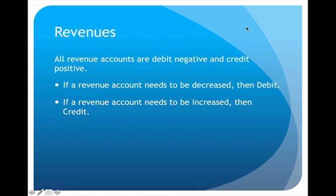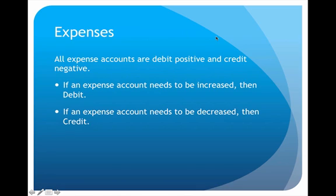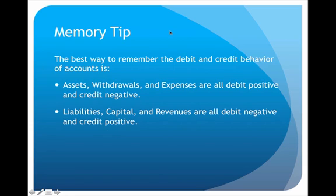Revenue accounts — whether a single account or multiple accounts — follow a debit negative, credit positive behavior pattern. If you want to decrease revenue that's a debit; if you want to increase revenue that's a credit. Expense accounts, of which there are usually many for all the various expenses a company pays, follow a debit positive, credit negative pattern. If an expense account needs to be increased you would debit it; if it needs to be decreased you would credit it.